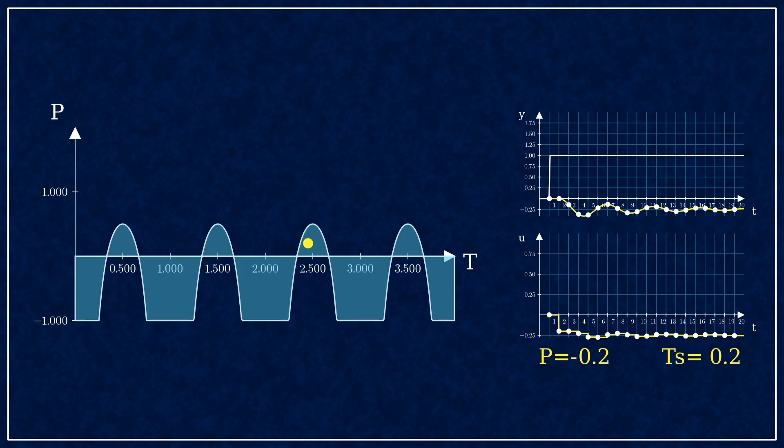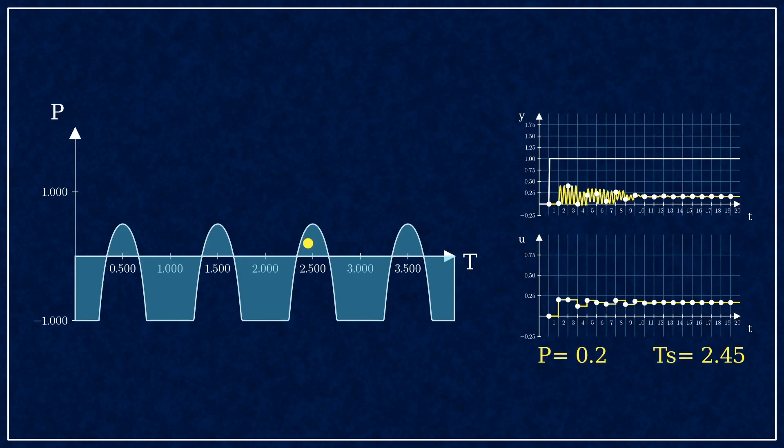Moving on to T equals 2.45, so about 2.5 times the oscillation period, you can see the plant output swinging between steps, but the controller is still stable.